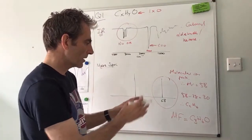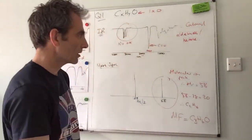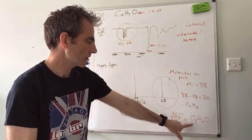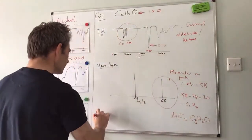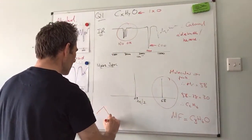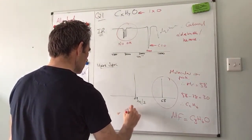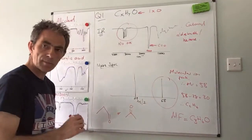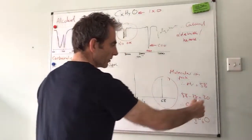So at this point we now know that it's an aldehyde or ketone with three carbons, so our options are propanal or propanone - they both have three carbons, six hydrogens and oxygen, both got an MR of 58.